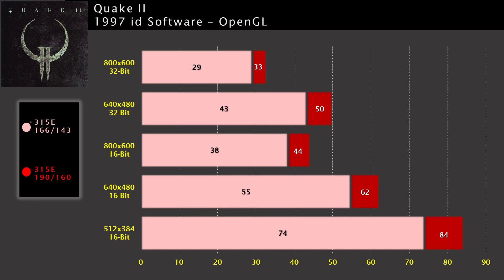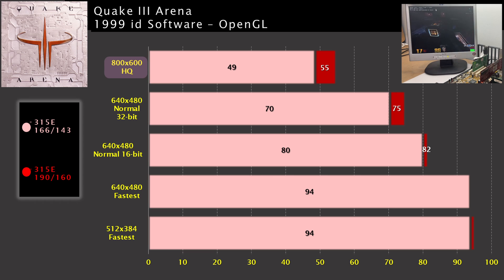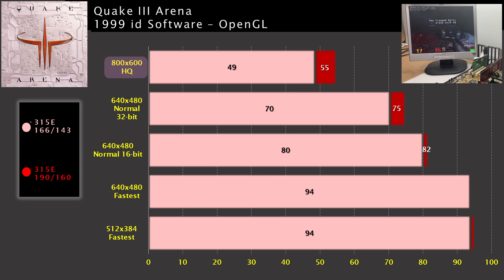Quake 2 starts to push the 315E and you'd probably stick to 640x480 in 16-bit with or without the overclock. Quake 3 seems to run decently using the normal preset and if you use the overclock you can nudge this up to high quality settings. For some reason the 32-bit color doesn't seem to penalize the 315E as much in Quake 3.